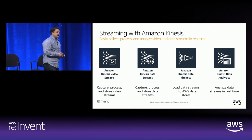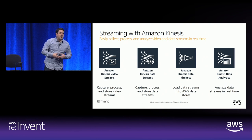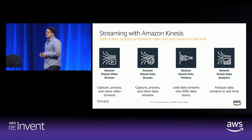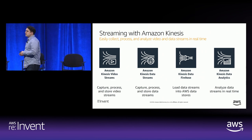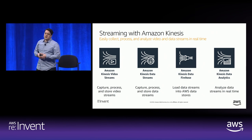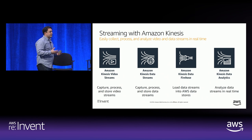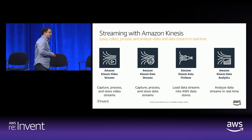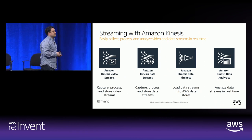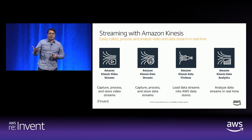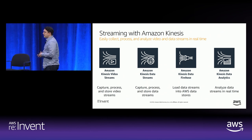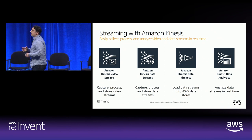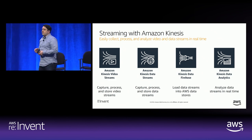Amazon Kinesis is a set of services that make it easy to work with streaming data on AWS. The focus is on our three data services. First, Amazon Kinesis Data Streams enables you to capture and process streaming data in real time. Second, Kinesis Data Firehose allows you to capture and deliver data in real time — it's primarily about data movement from point A to point B. Third, Kinesis Data Analytics allows you to analyze streaming data in real time with either SQL or Java code.